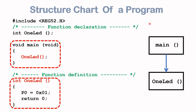Before we go any further, I'd like to take another look at the demonstration code. But this time, I'm going to represent it with these two boxes here connected by an arrow. This is known as what we call a structure chart. Here, the main box represents the main function in the C code, and this one LED box represents the one LED function in the code. Basically, what this tells us is that the main function is calling the one LED function. I'd like you to keep this in mind before we move on further with the video.